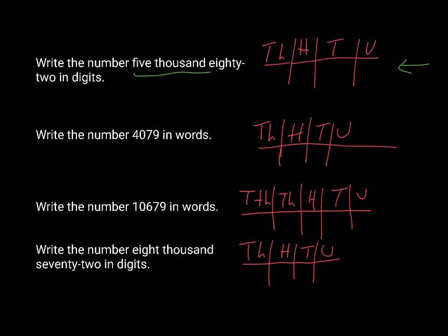So you've got 5,000 here, so that means that you put a 5 in this column, 82. Well that means 80 and 2, and that means you must have a zero in the hundreds column. So your answer would be 5082.